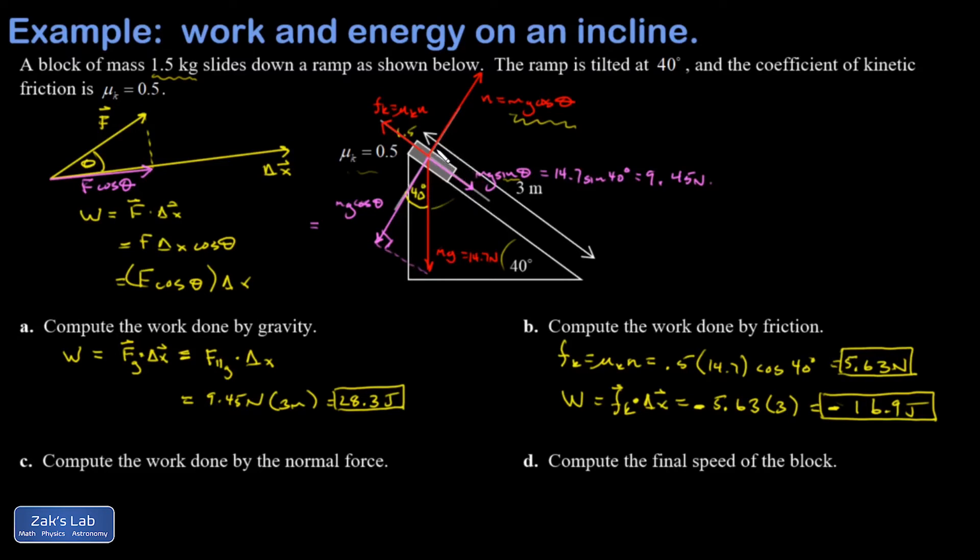And this is part of a larger theme that forces of constraint cannot do any work. Normal force is a type of force of constraint. It's just enforcing the fact that this block is constrained to the shape of this surface. And constraint forces always point perpendicular to the displacement. So in this case, the normal force is perpendicular to the displacement over the entire course of the motion. If the surface was curved, the normal force still would be perpendicular at every moment to every increment of displacement, and the same conclusion would follow.